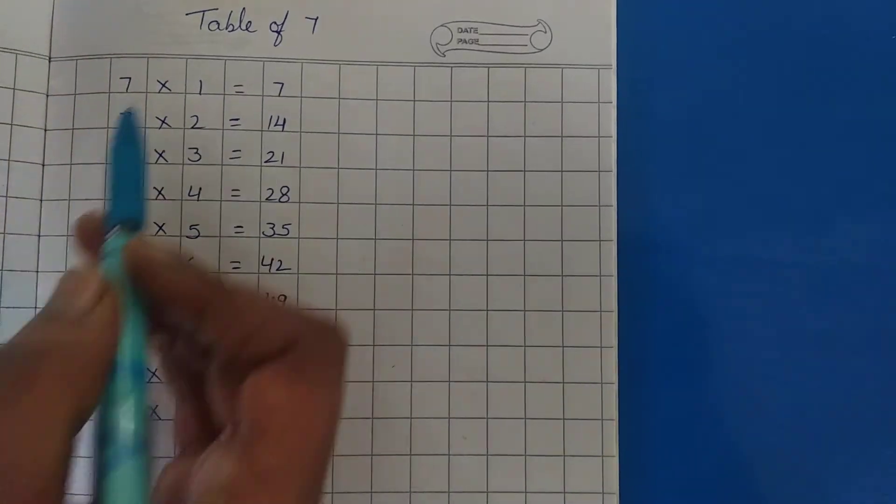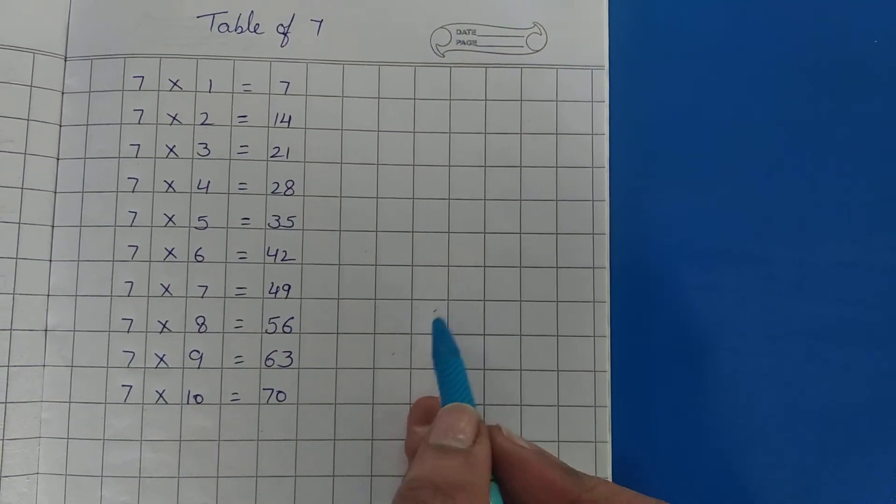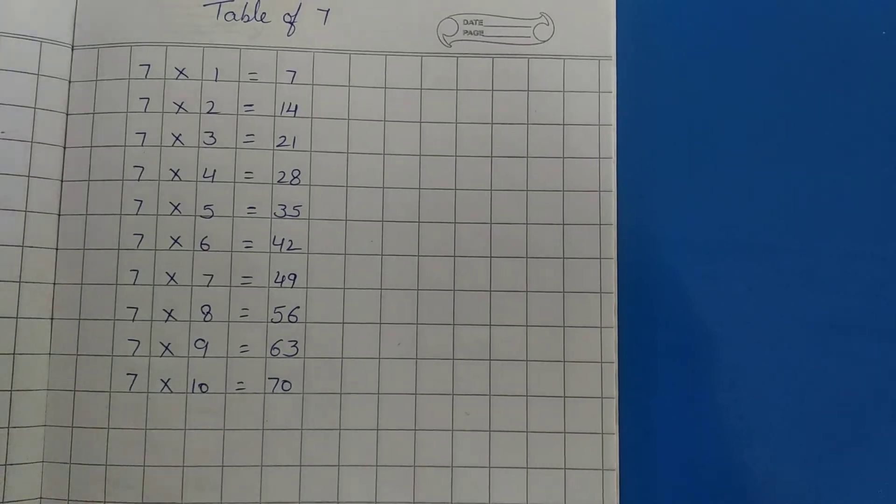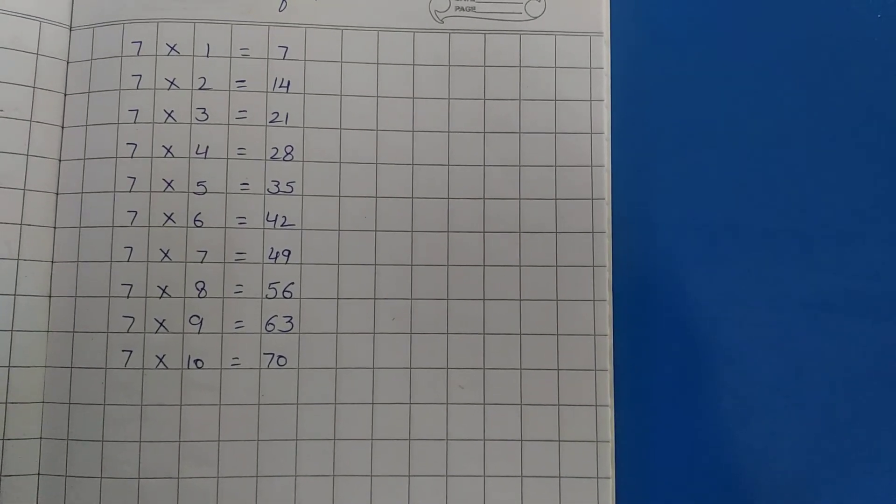time for homework. Table of 7, you have to write two times and learn it. Write it nicely. Okay children? Have a nice day. Bye-bye.